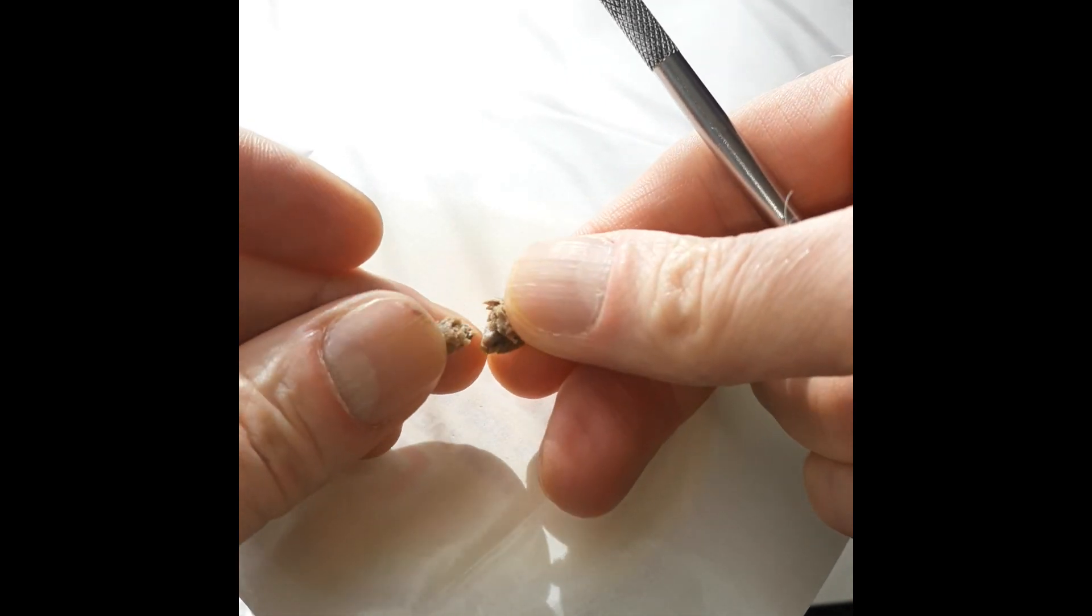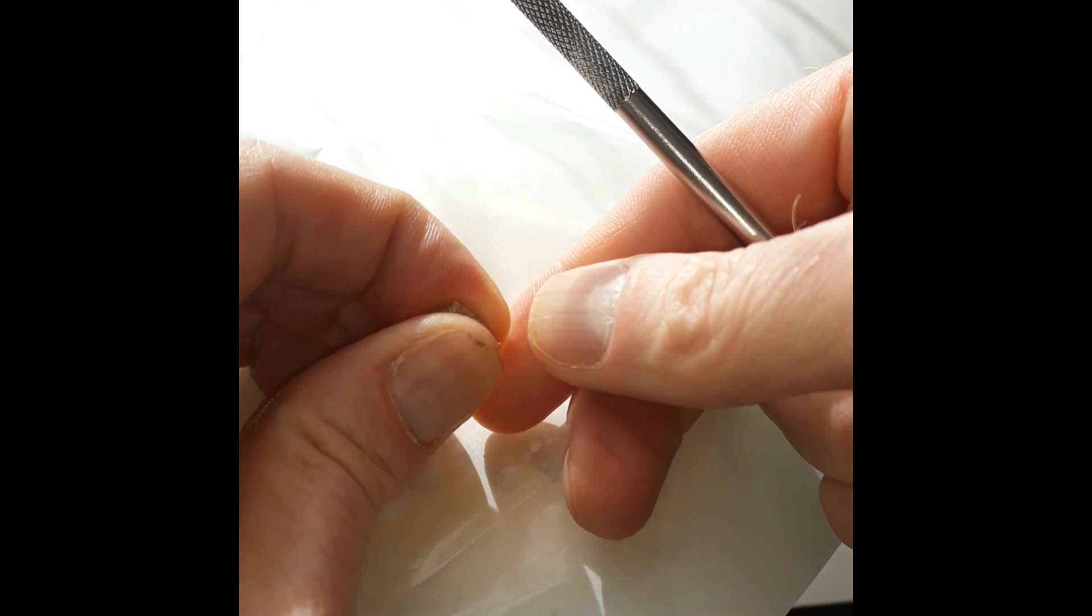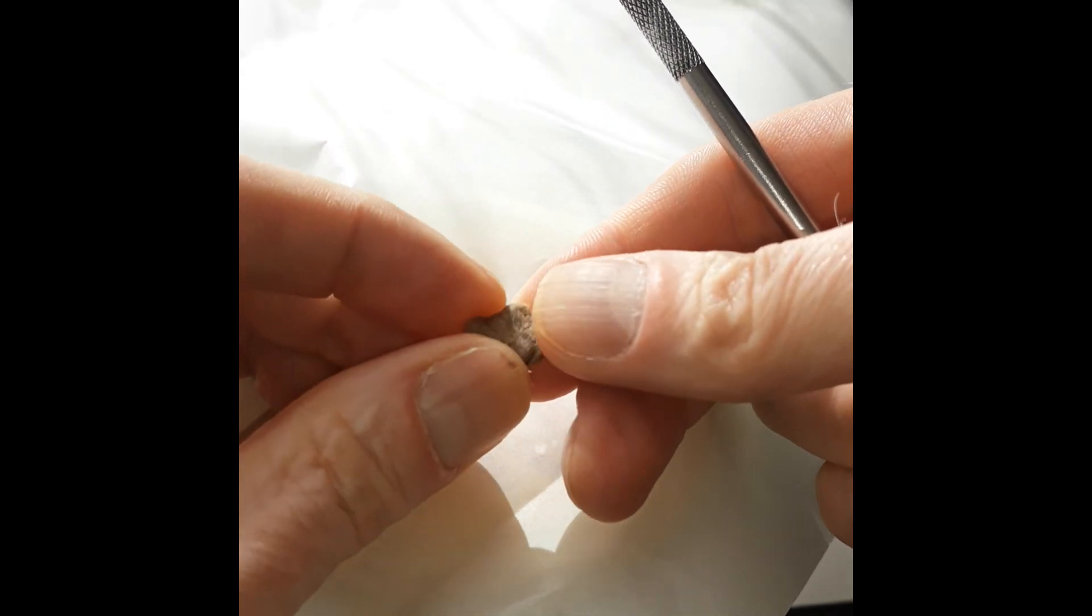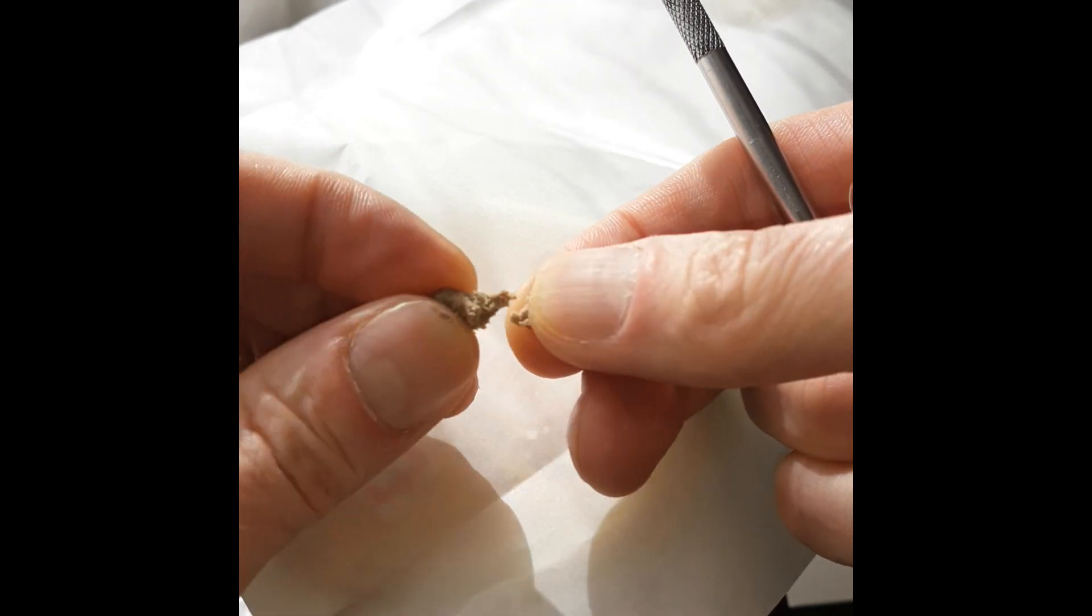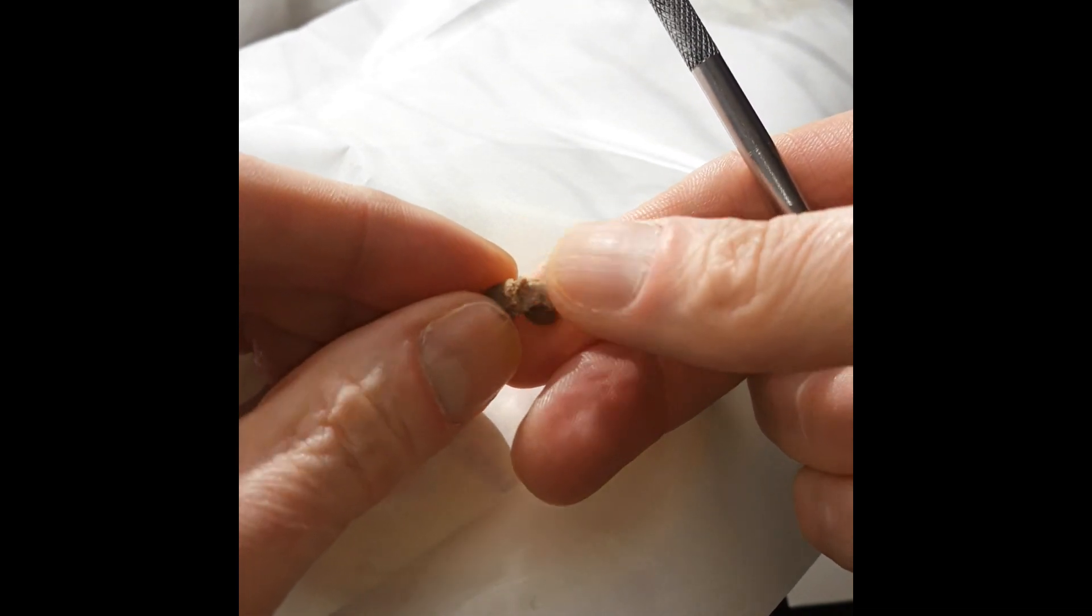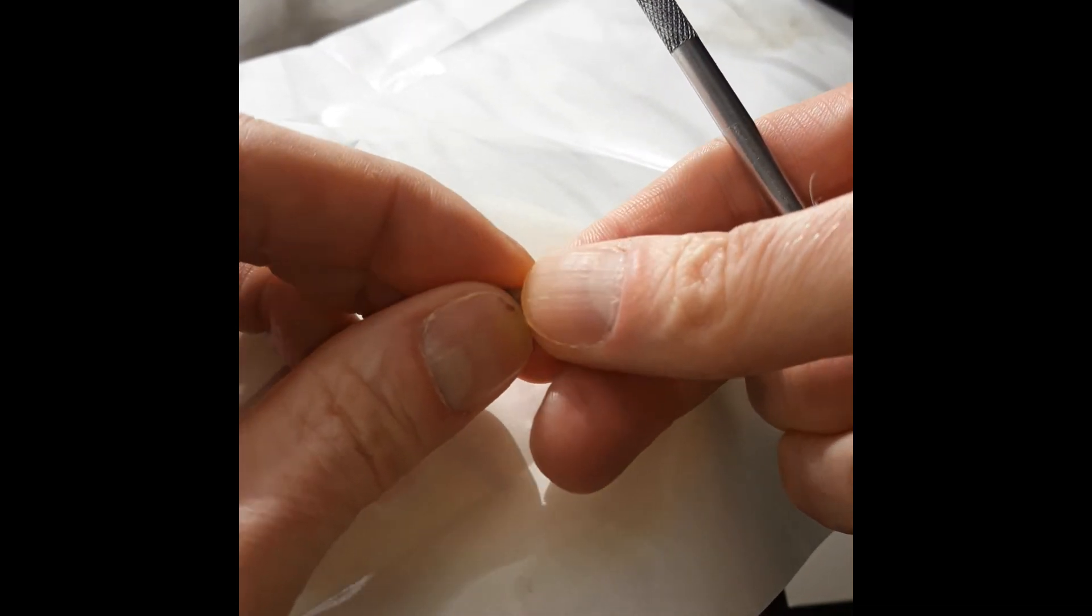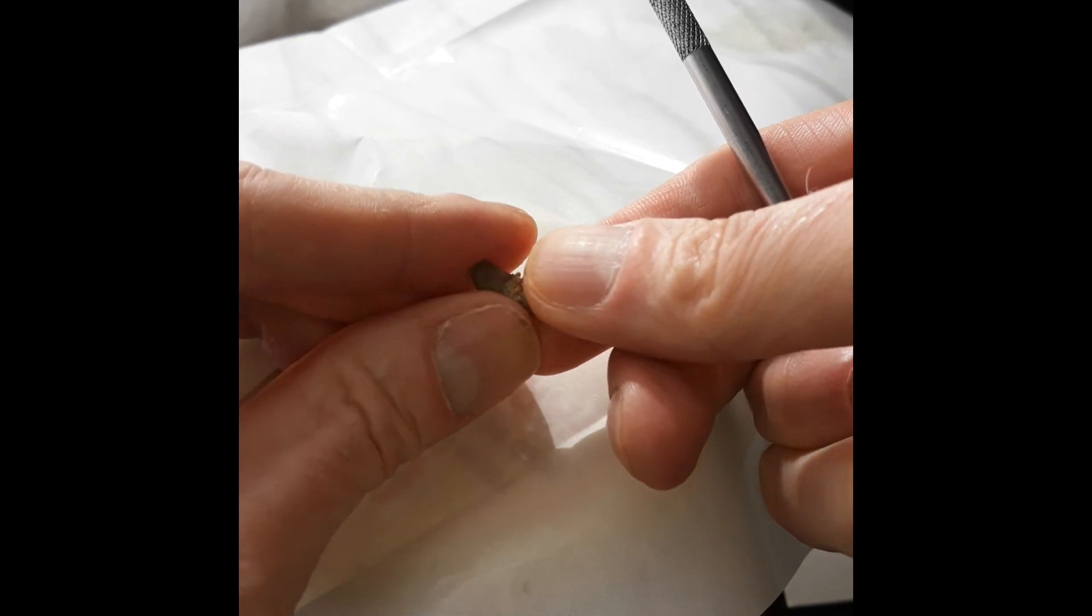That kind of shows you how dried out that flower is. That this hasn't produced what you would consider to be rosin. It's more produced just a gooey hash. It kind of shows you how little moisture and terpenes there are in it.